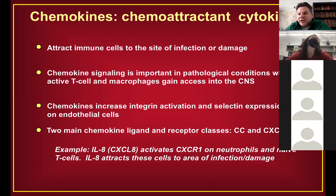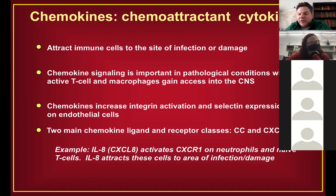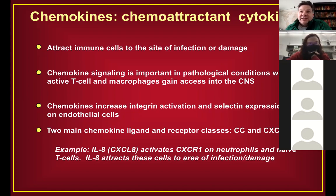Immunology initially called many of these molecules interleukins before realizing some are actually chemokines. For example, IL-8 is also called CXCL8 and it activates CXCR1 on neutrophils. We also saw earlier the CNS chemokine CX3CL1, or fractalkine, which has a microglia-neuron connection — that's the CX3C class with three X's between the cysteines.